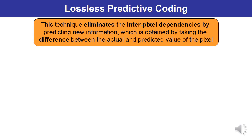Lossless predictive coding eliminates interpixel dependencies by predicting new information, which is obtained by taking the difference between the actual and predicted value of the pixel. So it is based on the difference between the actual and predicted value.